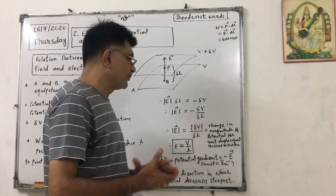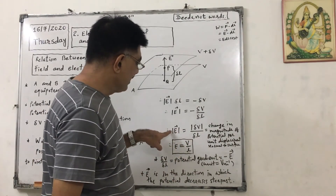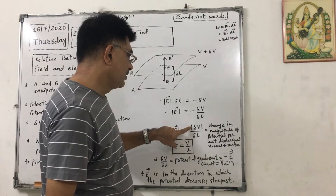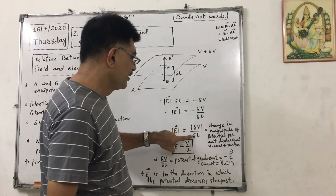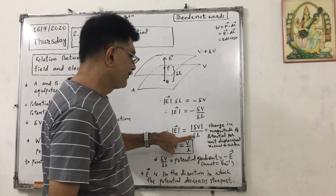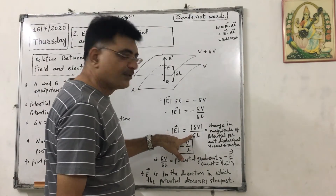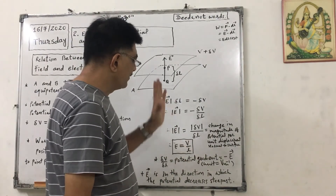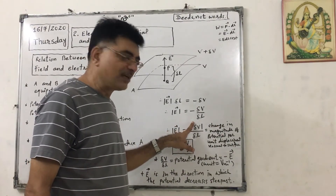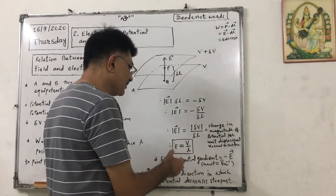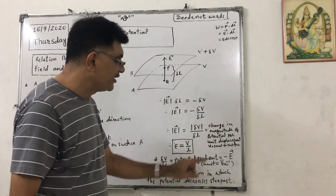If we consider only the magnitude, it can be written as mod of delta V divided by delta L. This means the electric field equals the change in magnitude of potential per unit displacement normal to the equipotential surface. In general, we can write E equals V by L. Here, delta V by delta L is called the potential gradient.